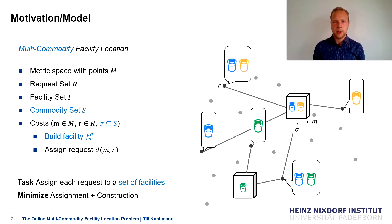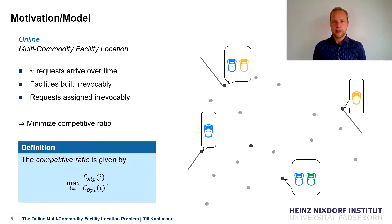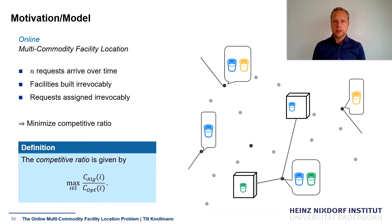We are especially interested in the online case where the requests are not present at the beginning but arrive over time. In total there are N many requests. When a request arrives, only at that point do you learn where it is located and which commodities it requests. The algorithm must immediately assign this request to a set of facilities jointly offering the commodities. The decisions of where to place facilities, in which configuration, and how to connect requests to facilities are made irrevocably — they cannot be changed later on.